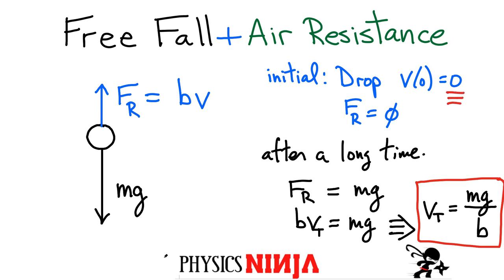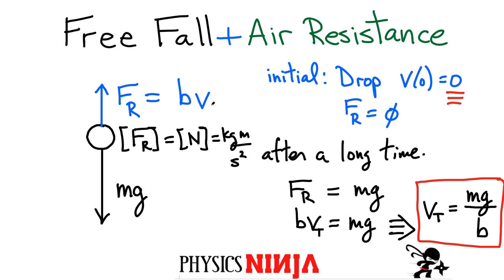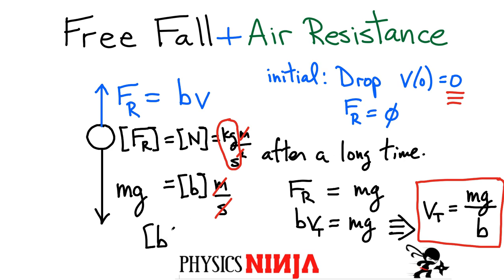Initially the velocity is zero if I just drop the object, and eventually the final speed should be mg/B. One more thing to look at is the dimensions of this constant B. The resistive force is in newtons, i.e., kg·m/s². That means the units of B multiplied by velocity (m/s) must also equal kg·m/s². Cancelling out a meter and one of the seconds, the units of B are kilograms per second.